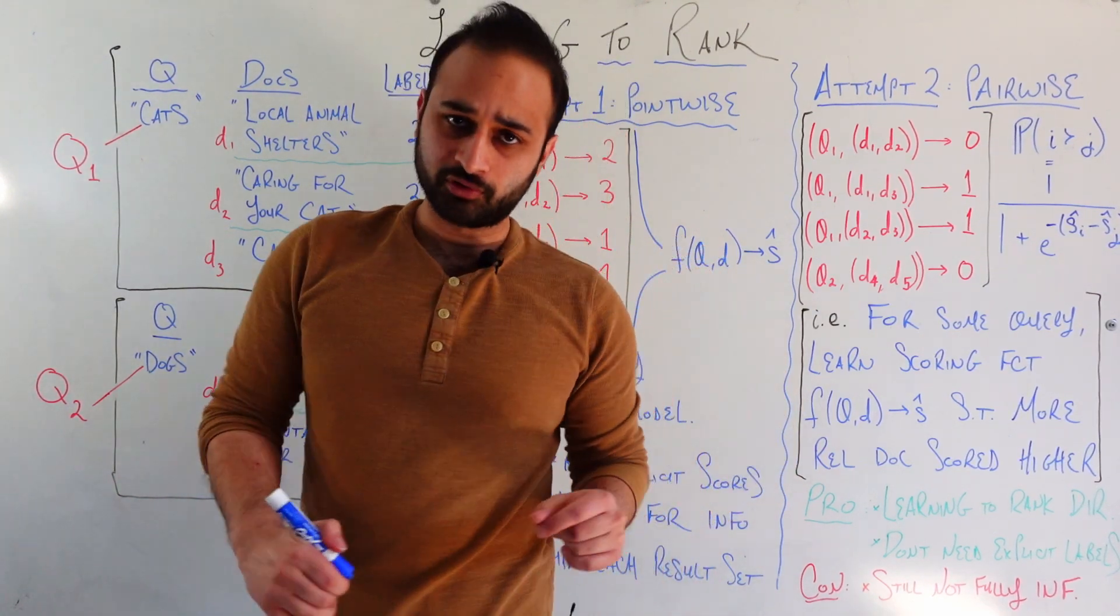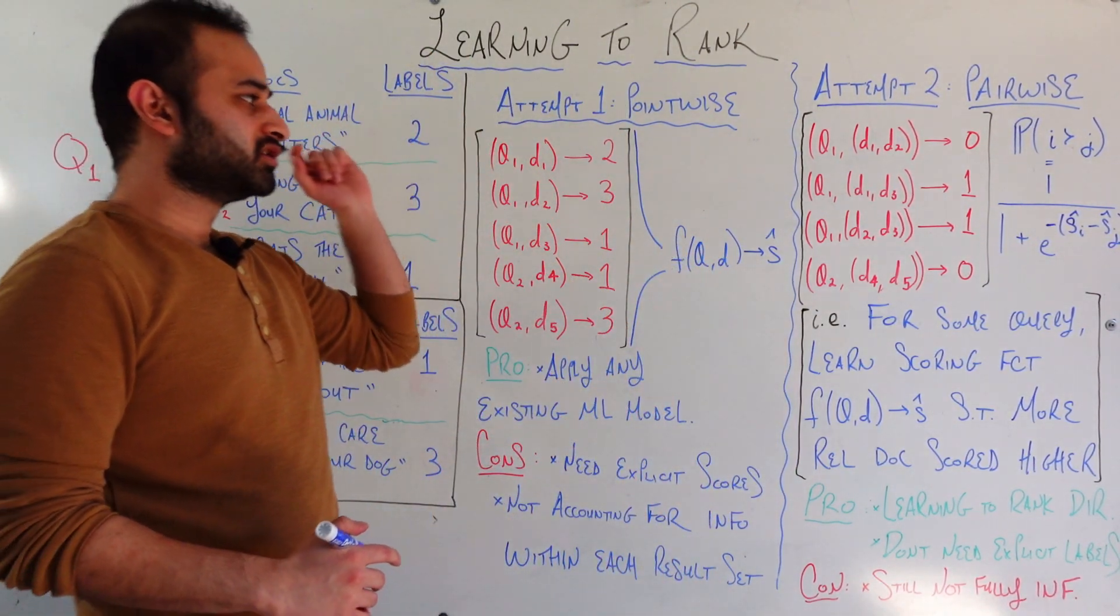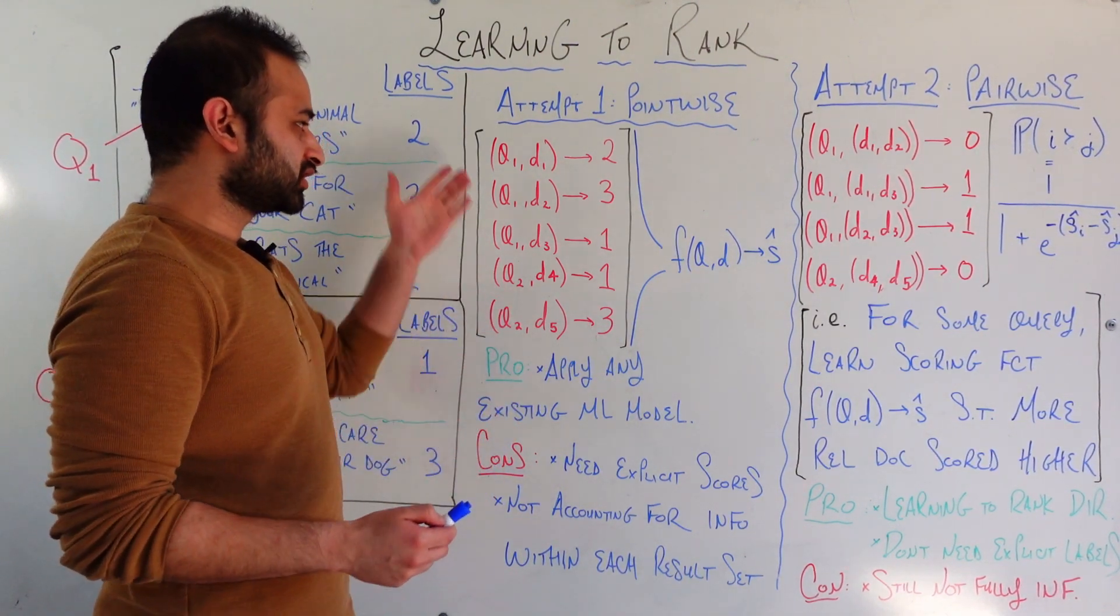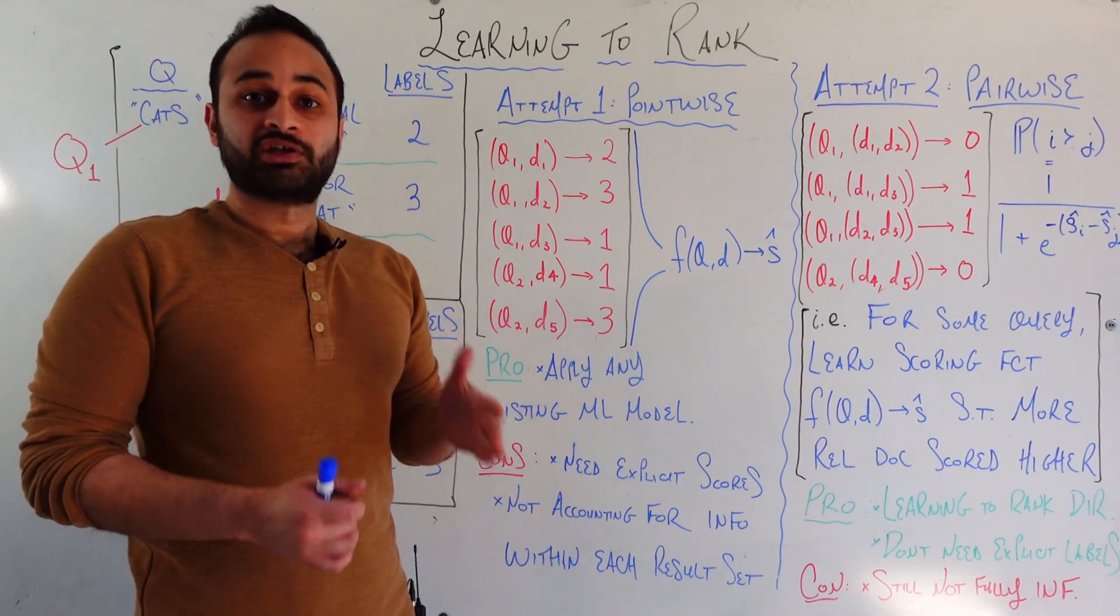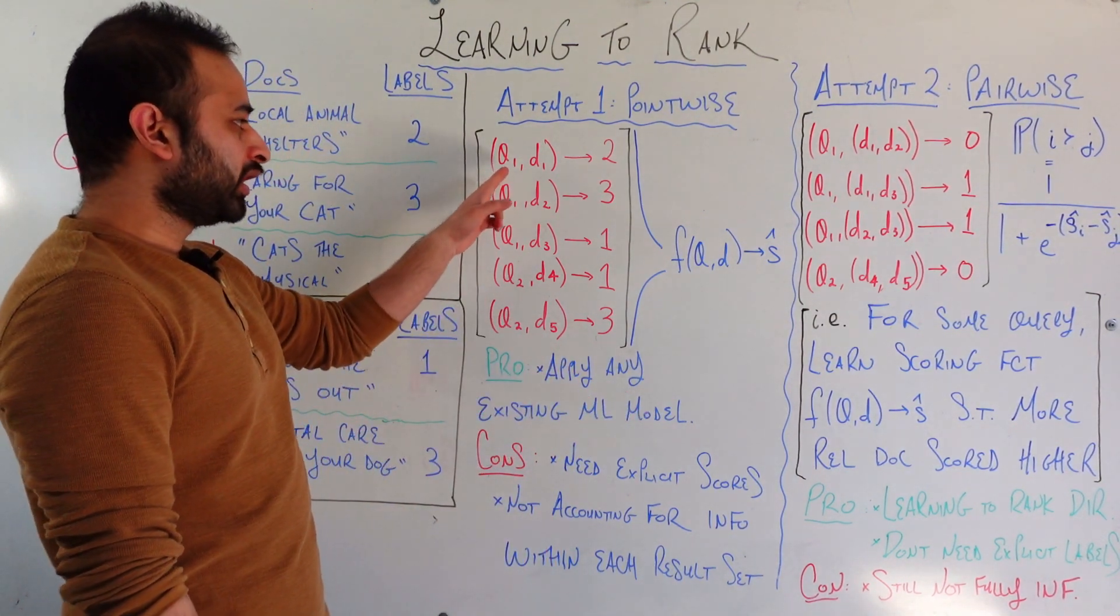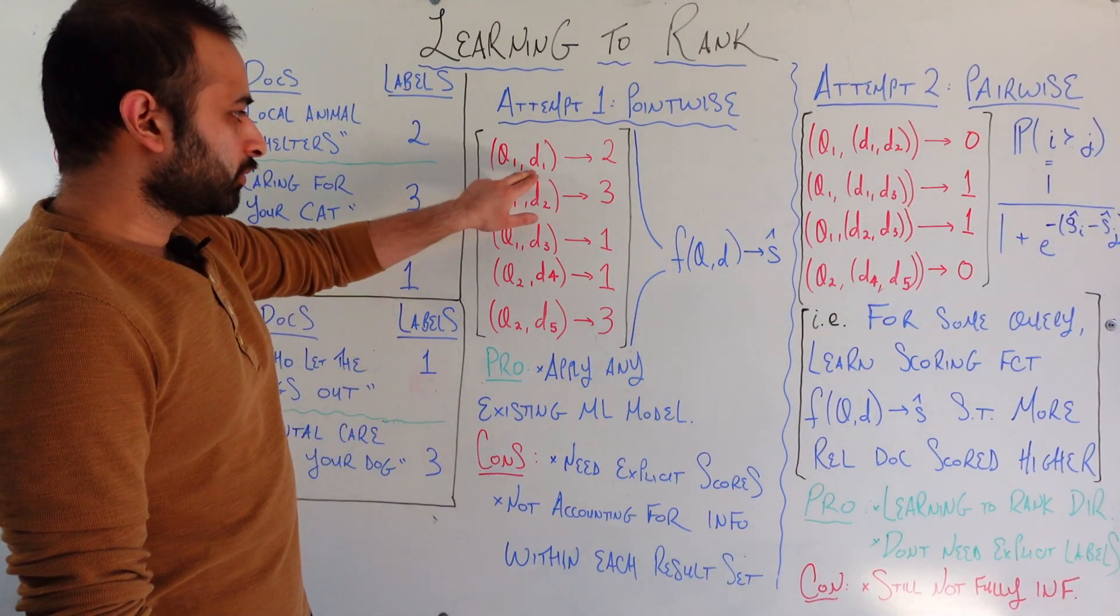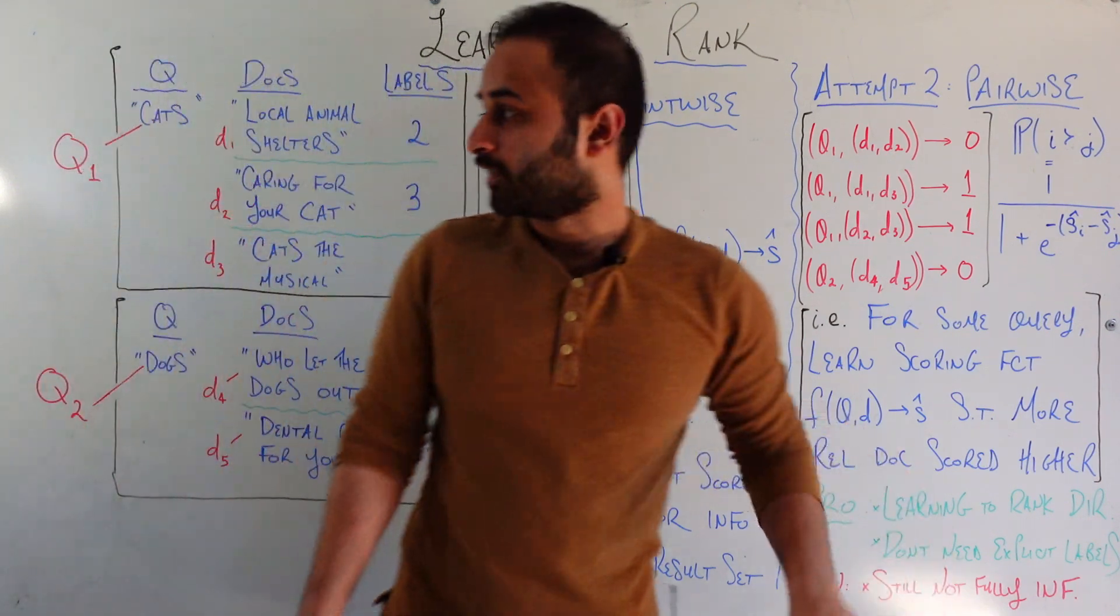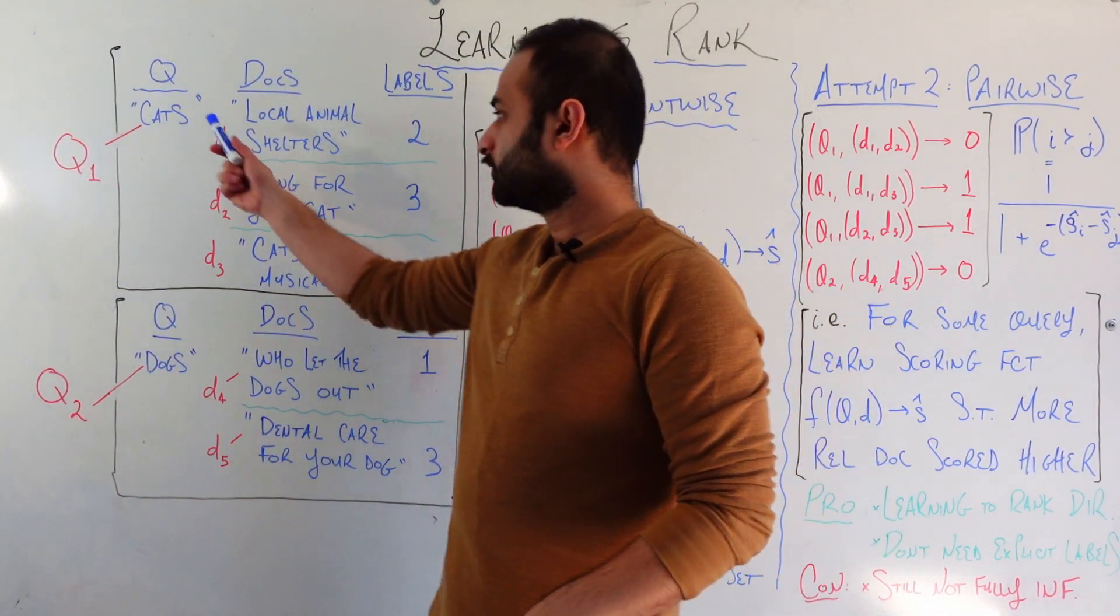We can learn which documents should be ranked above others for a particular query. We're going to start with the most naive approach, which is called the pointwise method. The pointwise method basically calls each training example, so each sample in your training set becomes a pair of query and document. So we have query 1, document 1, query 1, document 2, query 1, document 3.